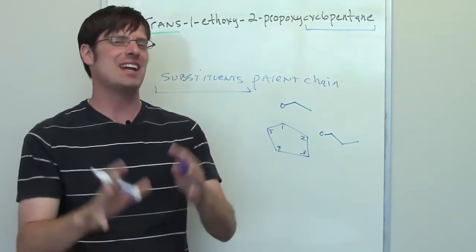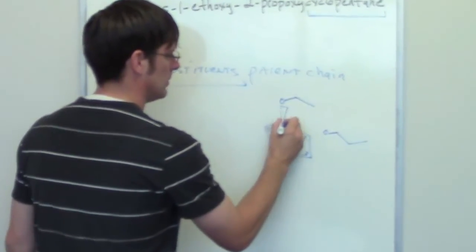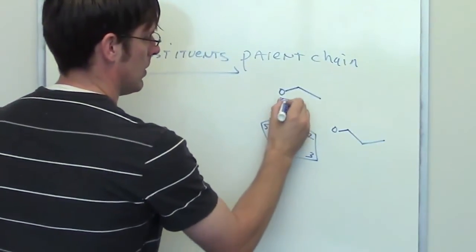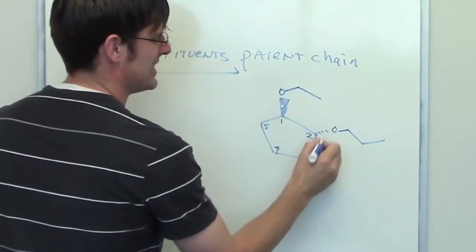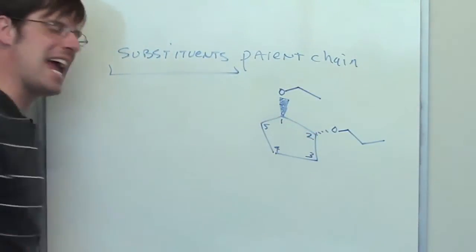That is, one of them is going to be pointing up and the other one will be pointed down. I've indicated that by drawing a wedgie on one and a dashie on the other.